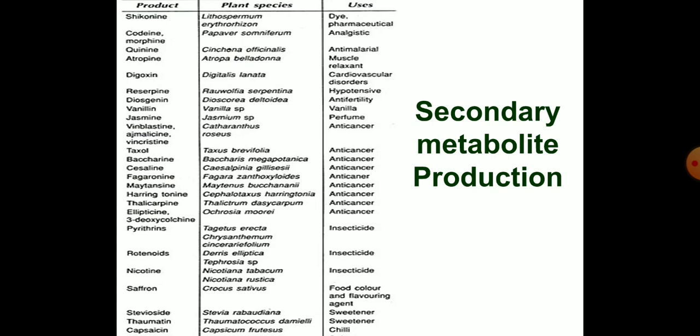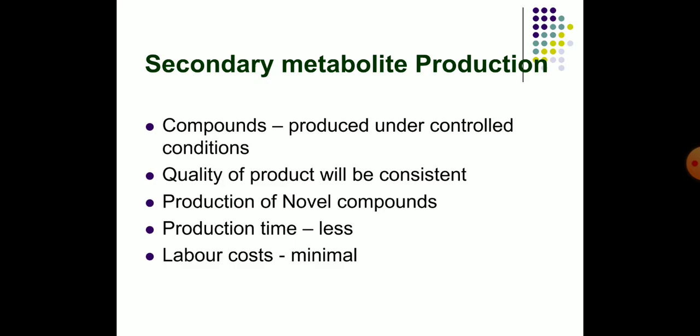Secondary metabolite production: Plant cells cultured in vitro have been considered a potential source of specific secondary metabolites. Major advantages are: compounds can be produced under controlled conditions as per market demands; quality of the product will be consistent as it is produced by a specific cell line; mutant cell lines can be developed for the production of novel compounds of commercial importance which are not normally found in plants; and the production time is less and labor costs are minimal.